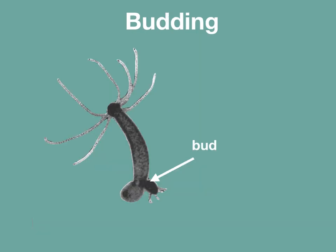Another form is through budding. This happens when a new organism develops from a growth or a bud on the side of the organism. The new growth has the same genetic information as the parent and eventually detaches from the parent and grows on its own.